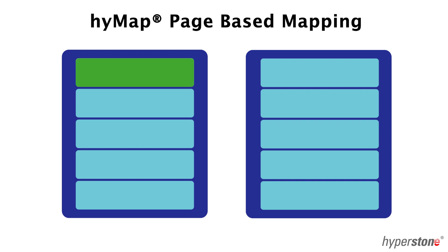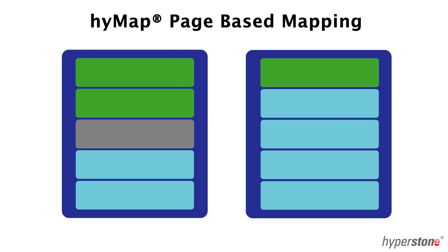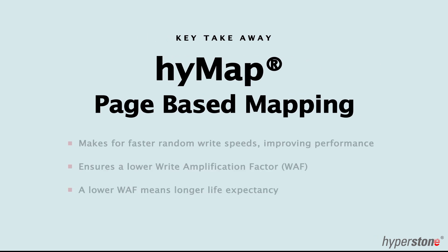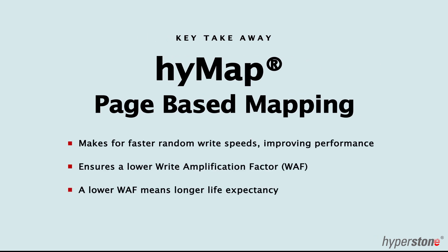In Hyperstone's sub-page based mapping system, pages are written the same way; however, when one page needs to be updated, that individual page is shifted into a new block. This means a lot less erasing and rewriting pages in different blocks. Ultimately, page-based mapping is more granular and makes for faster random write speeds, which improves performance.